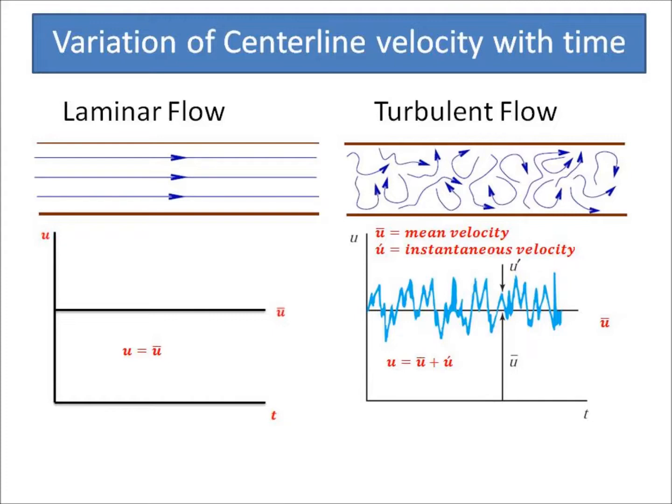For turbulent flow, the flow is unpredicted. The flow does not occur in layers, hence there is formation of eddies in any direction. That leads to the mixing of layers, hence the centerline velocity variation occurs with time.